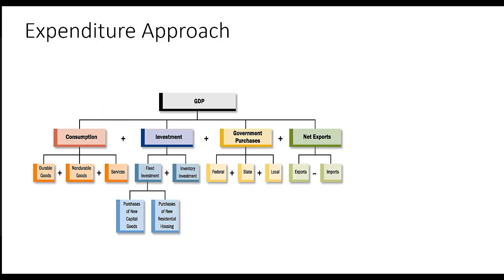For visual learners, here's a visual display of the expenditure approach as it relates to GDP. You can see the four categories — consumption, investment, government purchases, and net exports — along with all their subcategories. Within consumption: durable goods, non-durable goods, and services. Within investment: fixed investment, divided into new capital goods and new residential housing, plus inventory investment. Government purchases are broken down into federal, state, and local. Net exports are shown as exports minus imports.